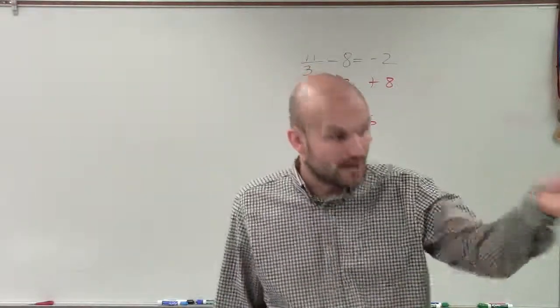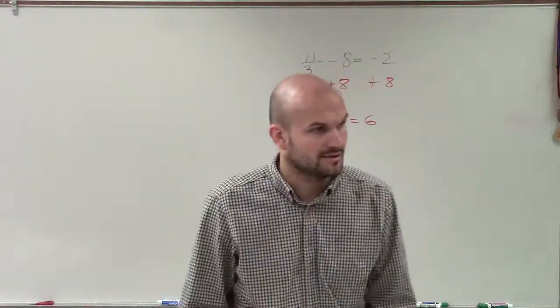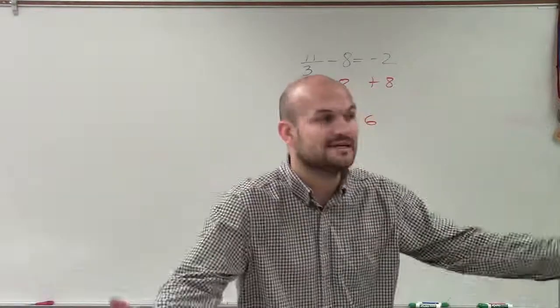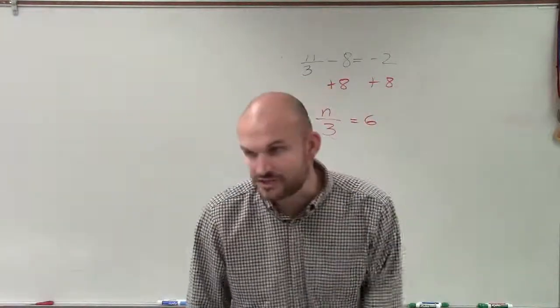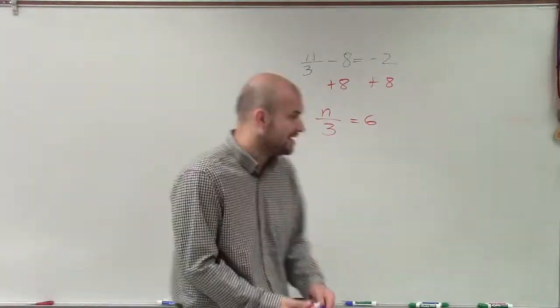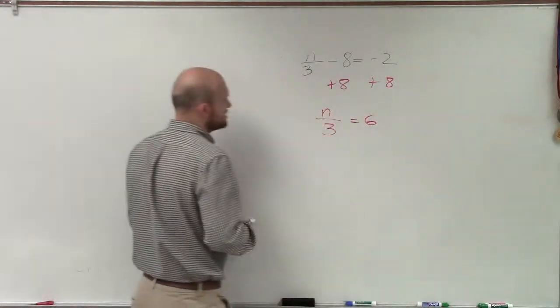Now, what is happening to my variable when I have n over 3? What operation? It's being divided, right? So to undo division, I have to multiply. So you multiply by 3 on both sides.